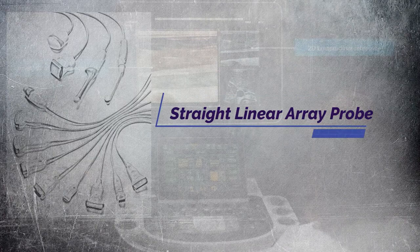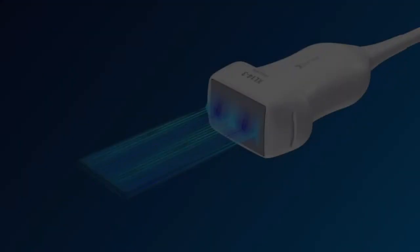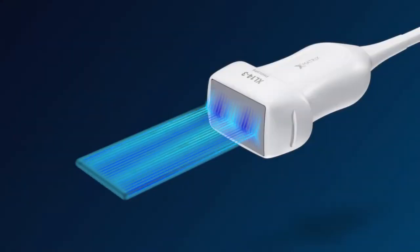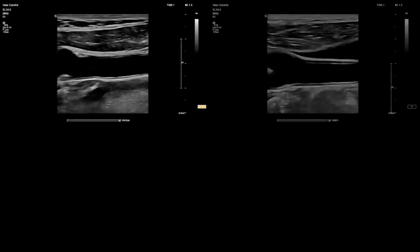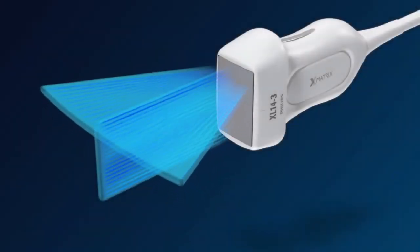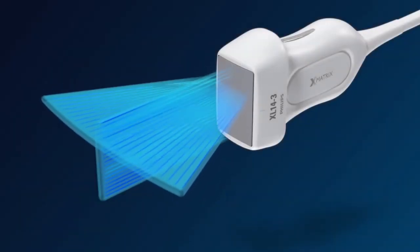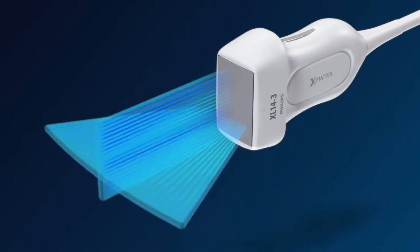Let's begin with straight linear array probes. The straight linear array probe is designed for superficial imaging. The crystals are aligned in a linear fashion within a flat head and produce sound waves in a straight line. The image produced is rectangular in shape. The probe has higher frequencies, 5 to 13 megahertz, which provides better resolution and less penetration. Therefore, this probe is ideal for imaging superficial structures and in ultrasound-guided procedures.